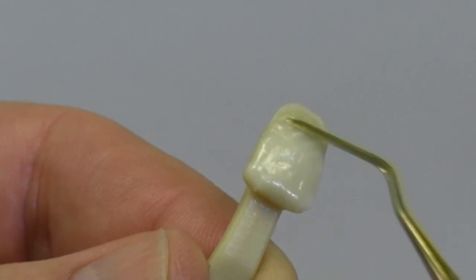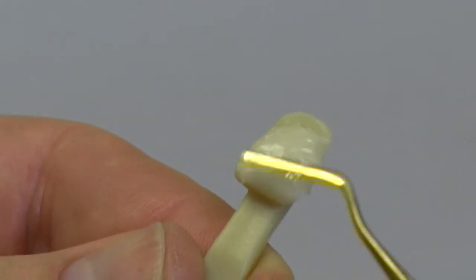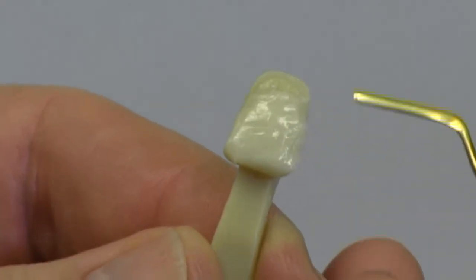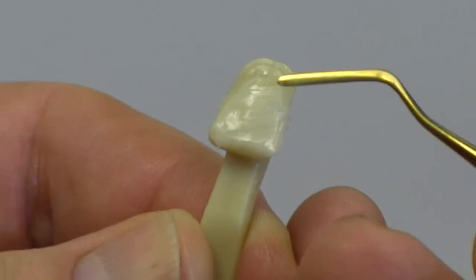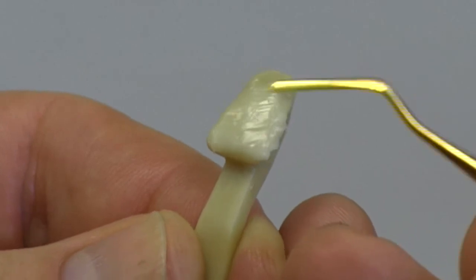As the material is manipulated by sculpting it here, you'll find that it's got a very balanced viscosity. Unlike the Renamel Micro Hybrid, which really does adapt extremely well but consequently has a little slump to it, what you'll find is that this stays put.